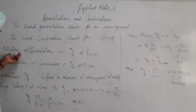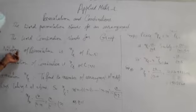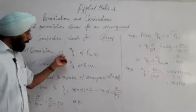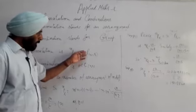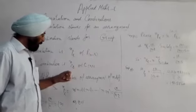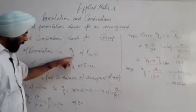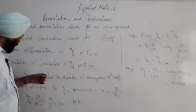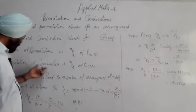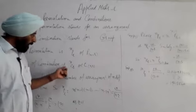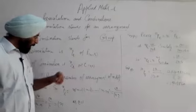Now the notation, how we write mathematically. Notation of permutation is nPr, which can also be written as Pnr, with n as upper limit and r below, from which we take atoms. Similarly, notation of combination is nCr, which can be written as Cnr.